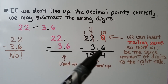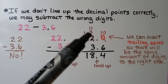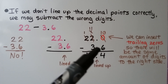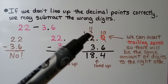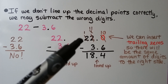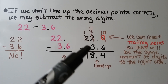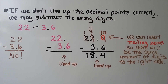We have 0 tenths minus 6 tenths — we need to regroup from the ones place. This 2 becomes a 1, and now we have 10 tenths minus 6 tenths, that's 4 tenths. We have 1 minus 3 and we can't, so we regroup from the tens place. The 2 becomes a 1, this 1 becomes an 11, and 11 minus 3 is 8. We drop down the 1 tens. We have 18 and 4 tenths. We made sure our decimal points were lined up.